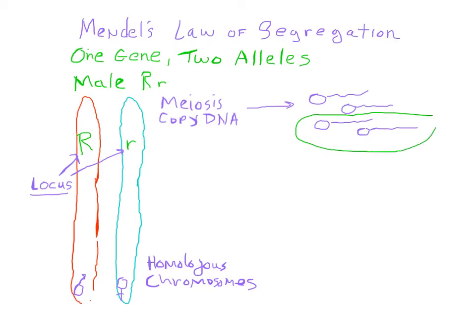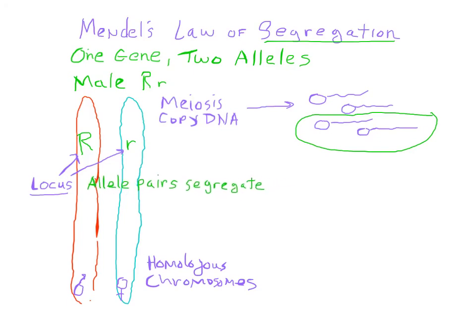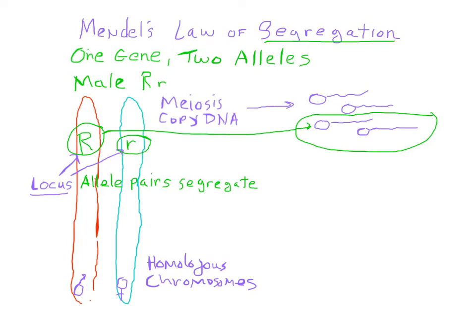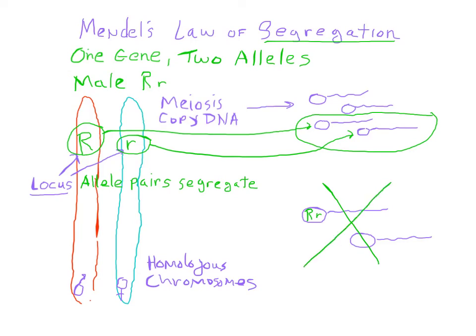In Mendel's law of segregation, this law states that the allele pairs segregate. All that means is that one of the alleles — say the dominant allele on the red chromosome — would go into one gamete, and the other allele from the blue chromosome would go into the other gamete. This would not happen where both alleles went into the same gamete. So this would be the result of Mendel's law of segregation.